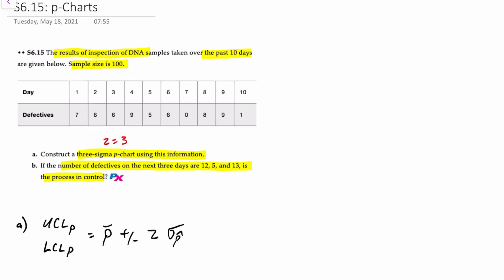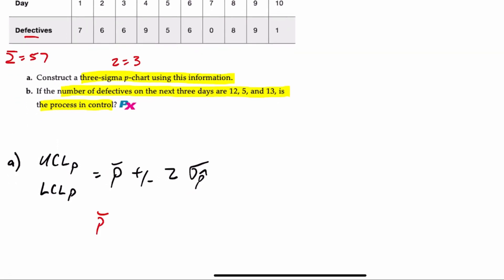If we add up all of the defectives, the sum is going to equal 57. And if we have 10 days times 100 samples in each, that means we have a total of 1,000 samples. Then p-bar is equal to 57 over 1,000, which is equal to 0.057 or 5.7%. That's the average defect rate over all of the samples.